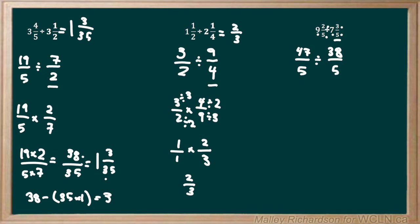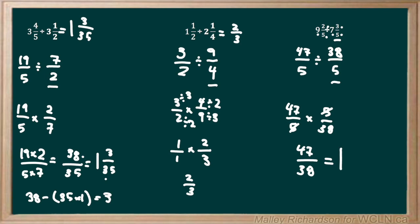To turn the division into multiplication, we multiply by the reciprocal of 38/5. So we keep 47/5 and multiply by 5/38. We can see that the 5s cancel each other out, leaving us with 47/38. We convert this improper fraction to a mixed number: 38 goes into 47 once, so the whole number is 1. The denominator stays 38, and the numerator is 47 minus 38 times 1, which is 9. Our final answer is 1 and 9/38.